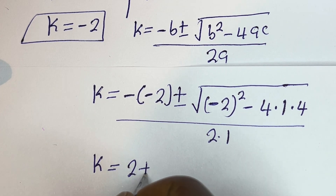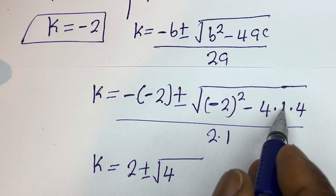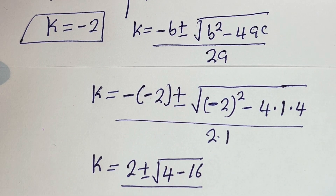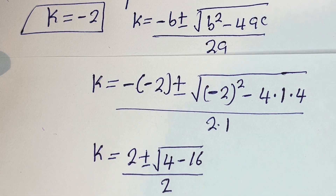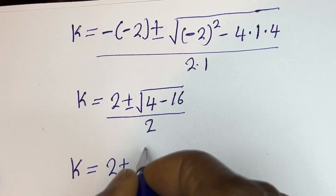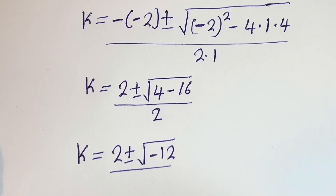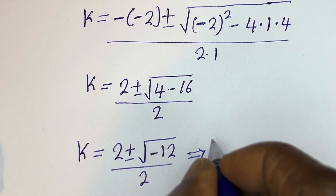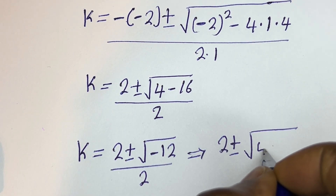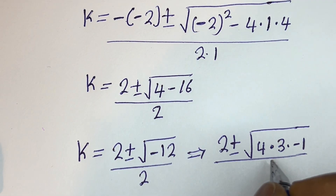So k equals minus bracket minus 2, plus or minus square root of minus 2 squared — that is 4 — minus 4 times 1 times 4, which is minus 16, all divided by 2. This gives k equals 2 plus or minus square root of 4 minus 16, which is minus 12, divided by 2. The square root of minus 12 can be written as square root of 4 times 3 times minus 1, all divided by 2.